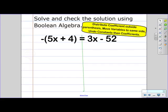Okay, so now that we have done that, we need to first take our coefficient that is outside of our parentheses and distribute that to the contents inside the parentheses.